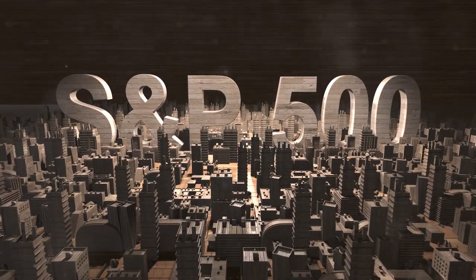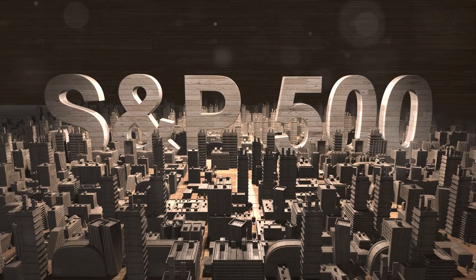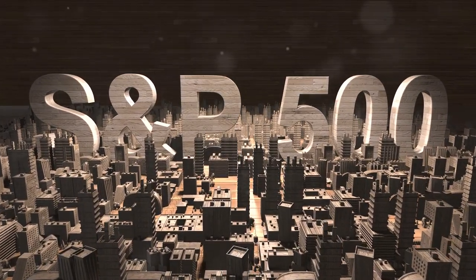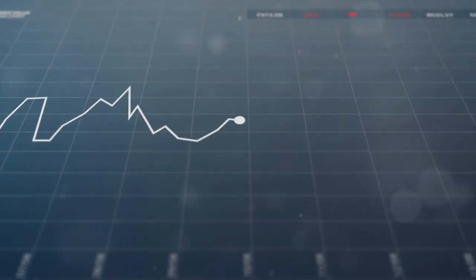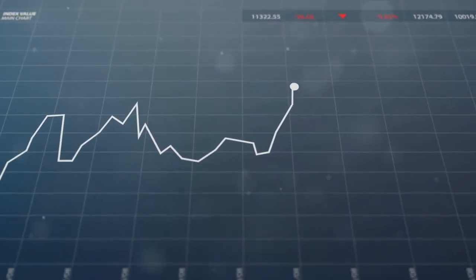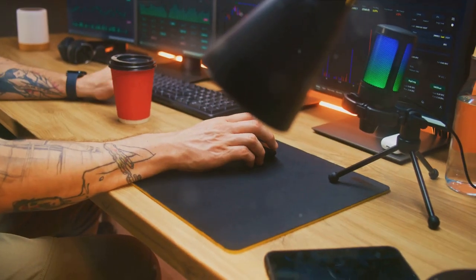If a particular company makes up 2% of the S&P 500, then 2% of the index fund would be invested in that company. This approach allows the index fund to mimic the performance of the index it's tracking. If the index goes up, so does the value of the index fund. If the index goes down, the index fund follows suit.